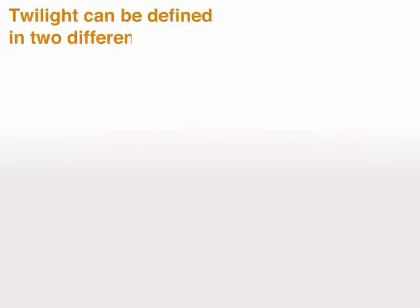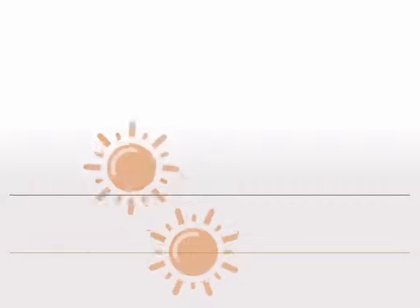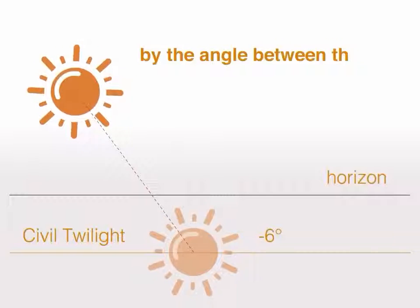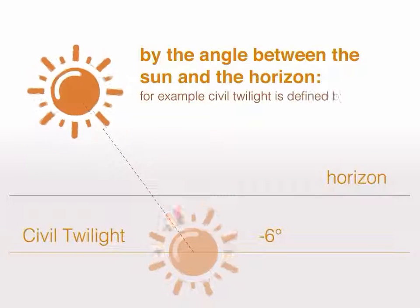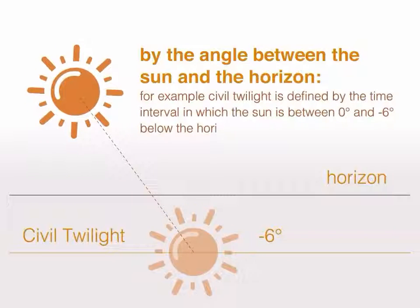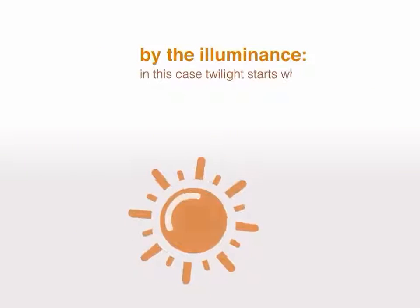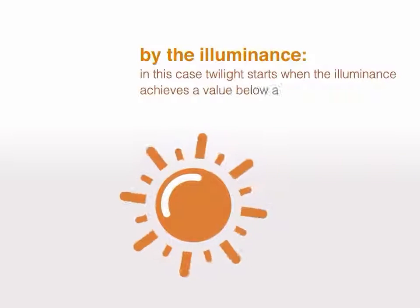Twilight can be defined in two different ways: by the angle between the Sun and the horizon — for example, civil twilight is defined by the time interval in which the Sun is between 0 and 6 degrees below the horizon — or by the illuminance, in which case twilight starts when the illuminance achieves a value below a determined threshold, usually 10 lux.